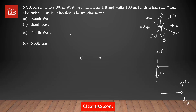Here the person is moving westward, then he turns left, which means now he's moving towards south — 100 meters. This is the point the person is at right now. Then he turns 225 degrees clockwise.